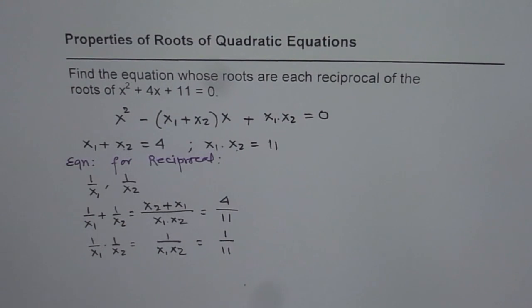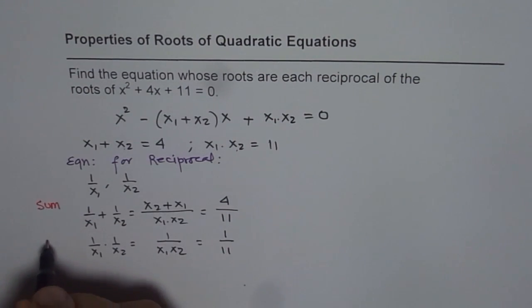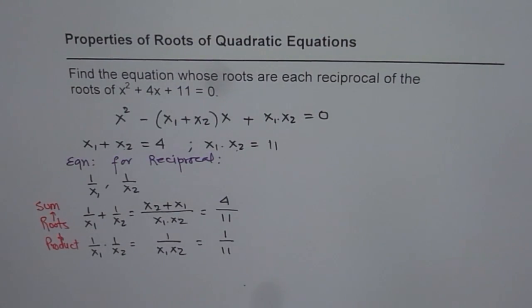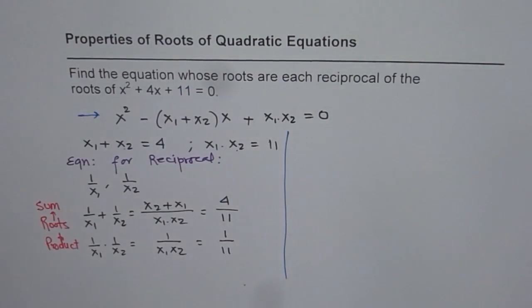So at this stage, we have got the sum of roots and the product of roots. We have both the equations. Now, we can write down our quadratic equation in this form, which includes sum and product form.